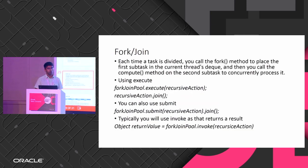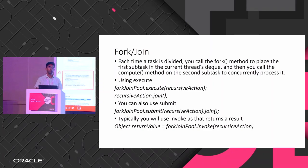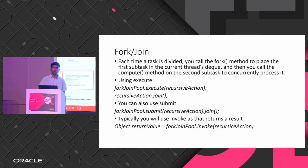You can use multiple methods: execute, submit, or invoke. With execute you create a RecursiveAction and then call join. The difference between submit and execute is that submit returns the recursive action so you can pipe it and do a join. With invoke you can actually get a return type — that is what is typically used.